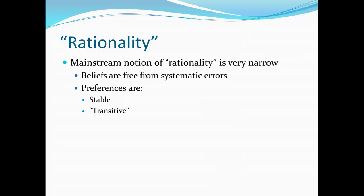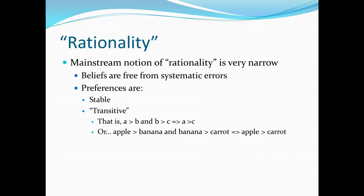Secondly, we'd say that preferences are transitive. What that really means is that, very much like in math — where we say A is greater than B, B is greater than C, therefore A must be greater than C — applying this to preferences, we'd say an apple is preferred to a banana, a banana is preferred to a carrot, so given the choice between an apple and a carrot, the person should choose the apple.